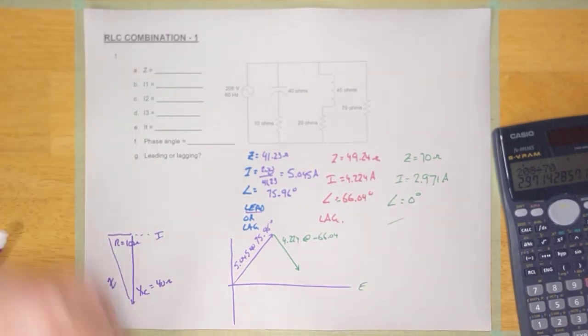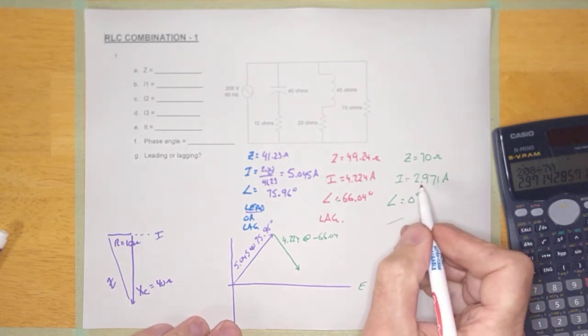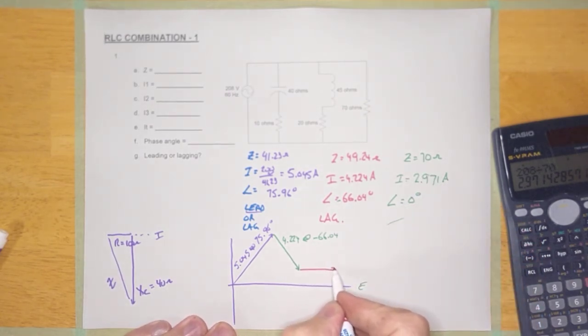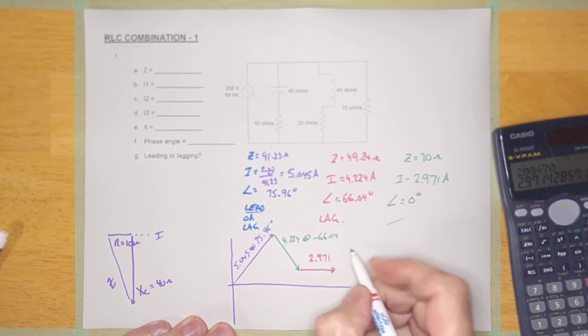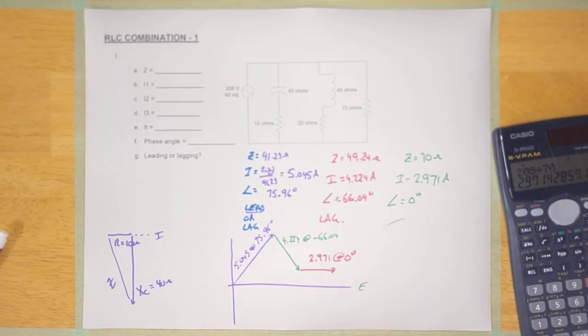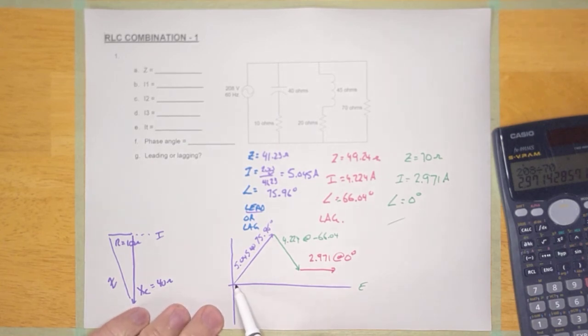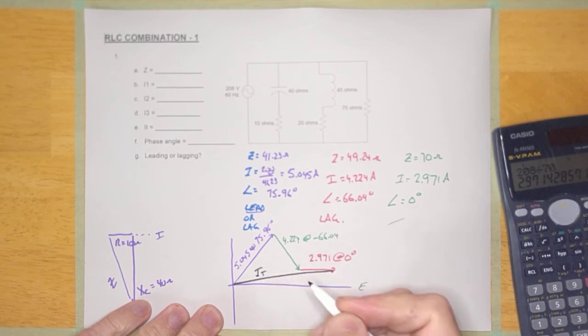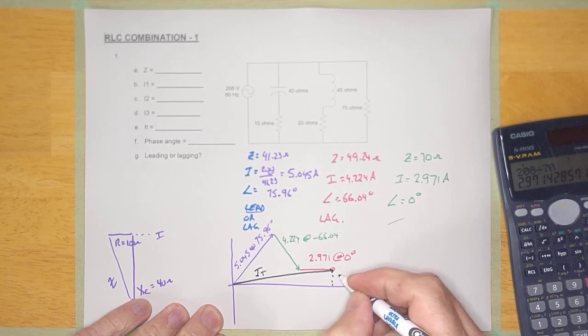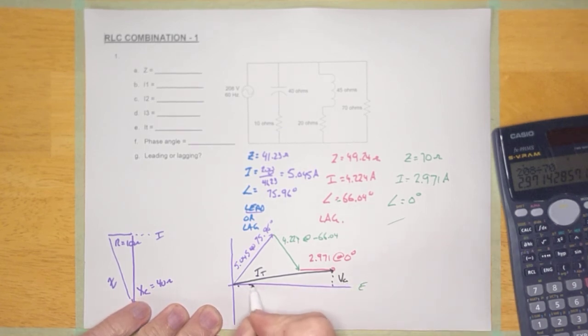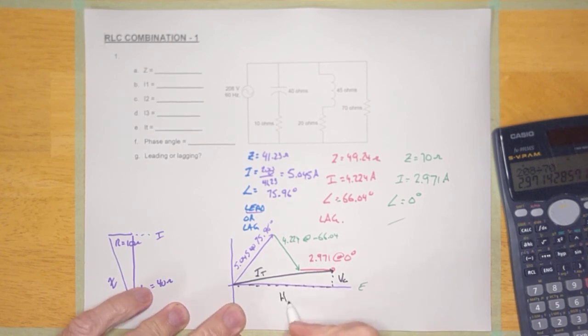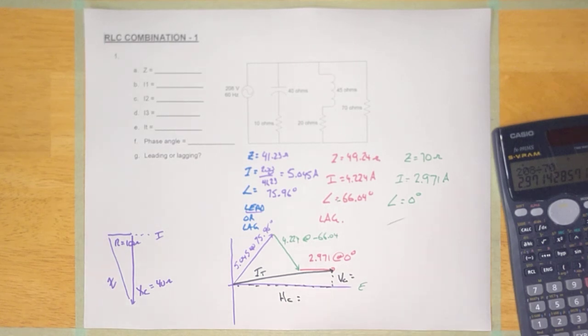Now, the last phaser here is this one right here, 2.971. 2.971, and it's sitting here at zero degrees. And we're going to add this up in a second, but on another video. But what I want you to notice is that the resultant, or I total, this is I total for the circuit. It is the sum of the three currents. And it's going to have a vertical component, and it is going to have a horizontal component. And in the next video, I'm going to calculate those both. So, come on back.